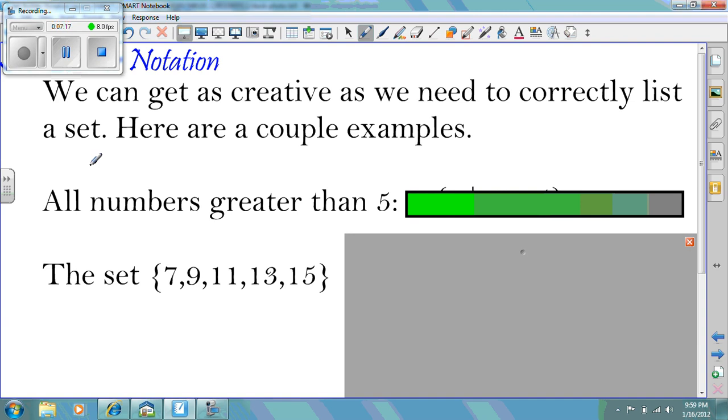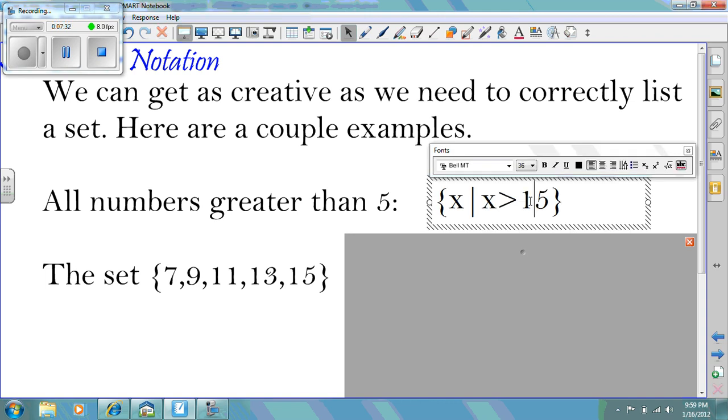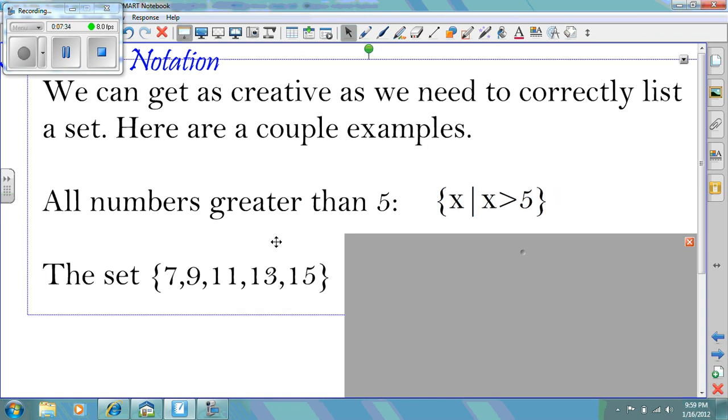We can get as creative as we need to correctly list the set. And here are a few examples. The first example is actually kind of a quick one. All numbers greater than 5 would look like this. The set of all X, such that X is greater than, I have an error here. It should be greater than 5.